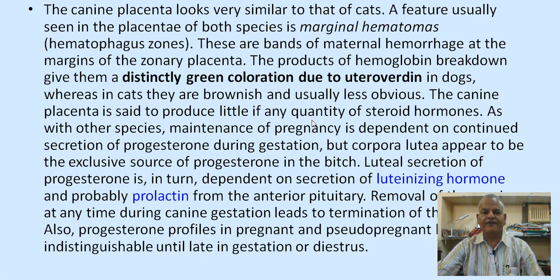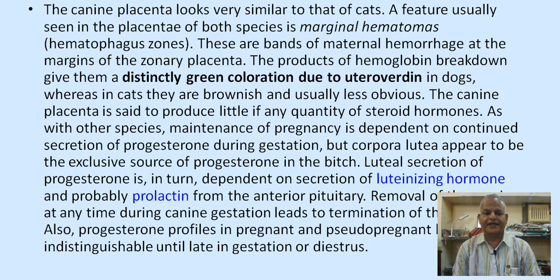The canine placenta is said to produce little if any steroid hormones. Maintenance of pregnancy is dependent on continued secretion of progesterone during gestation, but corpora lutea appear to be the exclusive source of progesterone in the bitch. Luteal secretion of progesterone depends on secretion of luteinizing hormone and probably prolactin from the anterior pituitary. Removal of the CL at any time during canine gestation leads to termination of pregnancy, and progesterone profiles in pregnant and pseudo-pregnant bitches are indistinguishable until late gestation or diestrus.